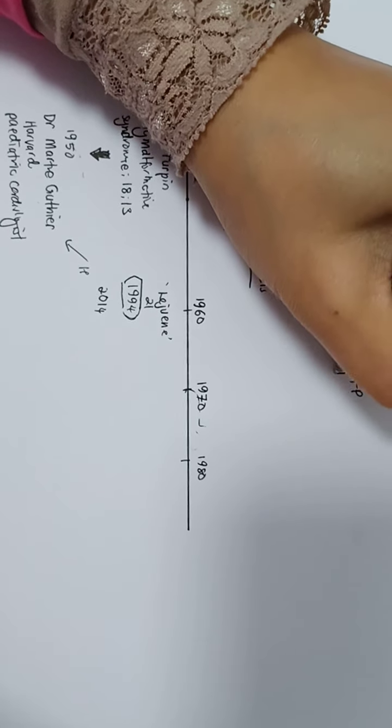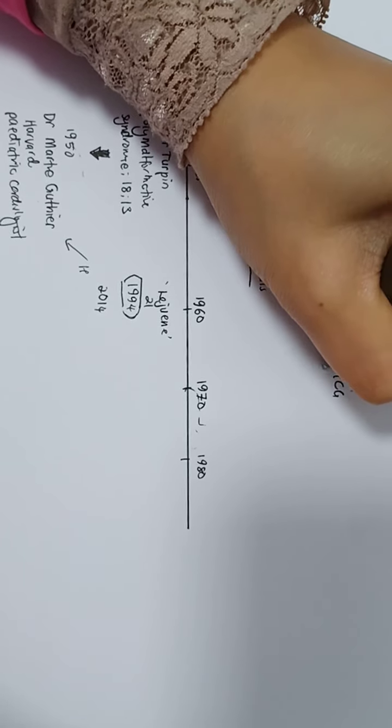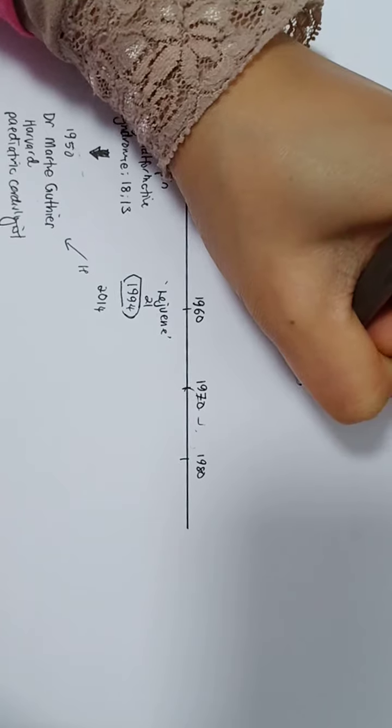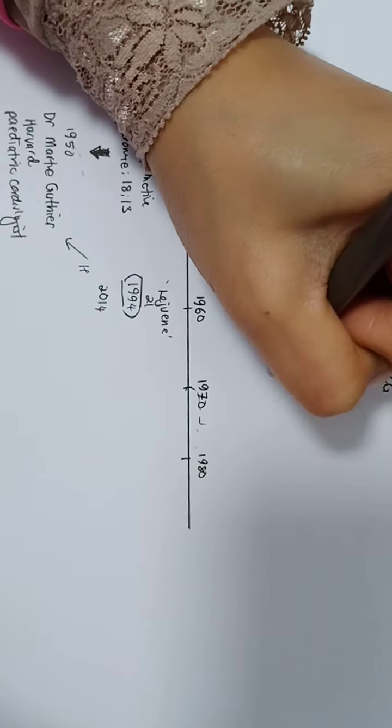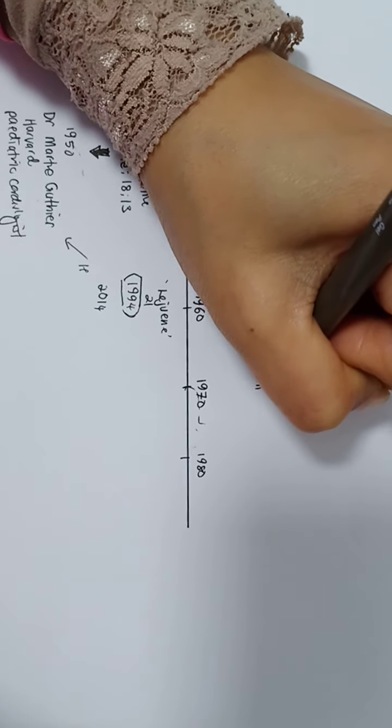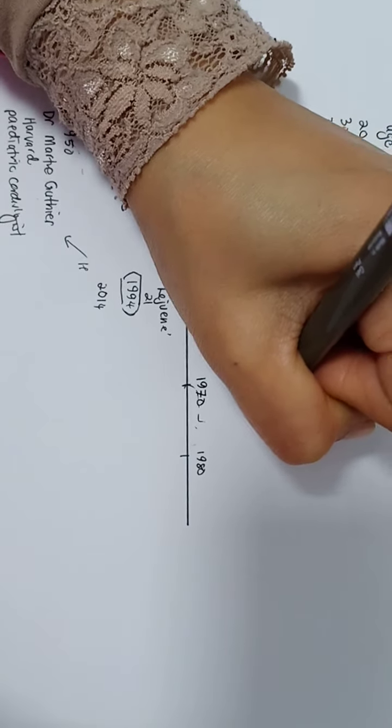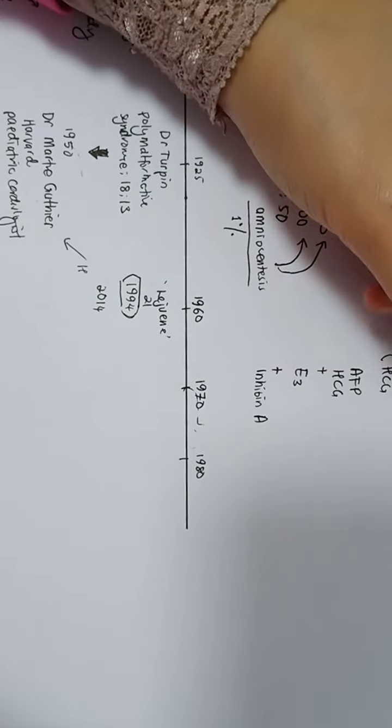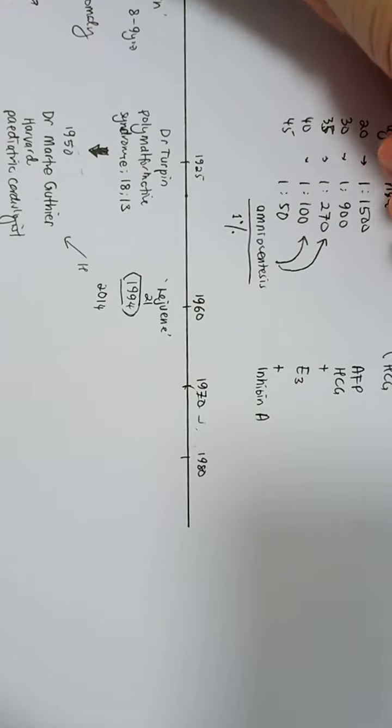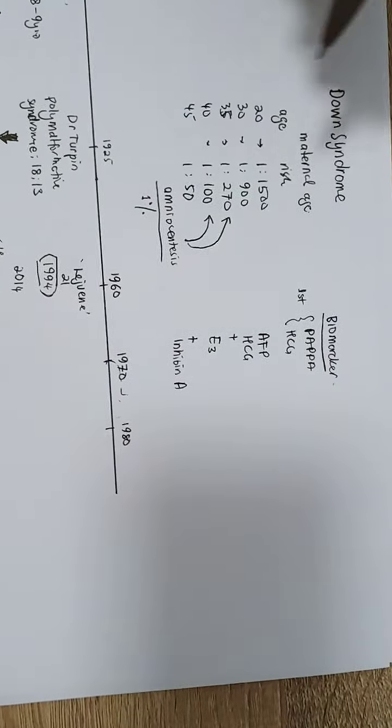We have AFP, HCG. If you want to increase further, we can do estriol and also inhibin A. It's a quadruple. So these biomarkers can guide us which patients need to have amniocentesis.